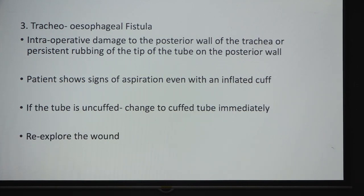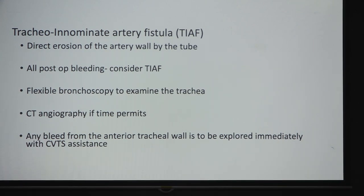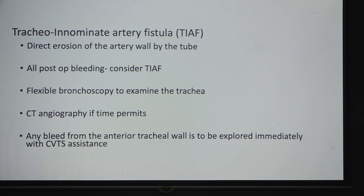Tracheoesophageal fistula is rare — intraoperative damage to the posterior tracheal wall can occur during tracheostomy or from persistent tube tip rubbing. The patient will show signs of aspiration even with an inflated cuff. If uncuffed, change to a cuffed tube immediately and re-explore the wound. The tracheo-innominate artery fistula is rare but serious — direct erosion of the artery wall by the tube. Any post-op bleeding should be taken seriously. Perform flexible bronchoscopy first; if suspicion is high, obtain CT angiography. Any bleed from the anterior tracheal wall must be explored immediately with cardiothoracic surgery assistance.